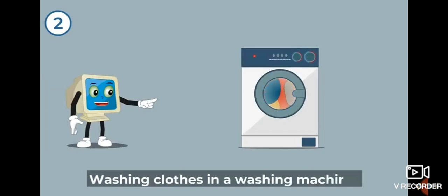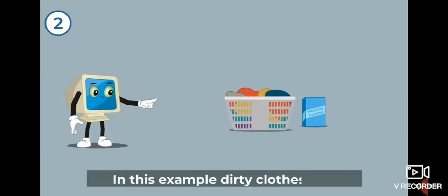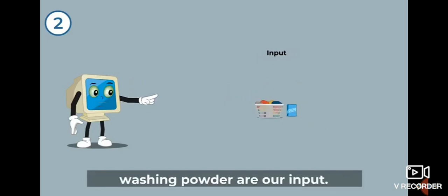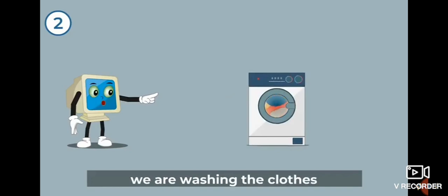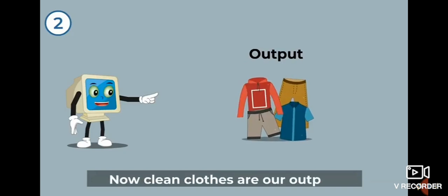Two. Washing clothes in a washing machine. In this example, dirty clothes and washing powder are our input. We are washing the clothes as a set process. Now, clean clothes are our output.